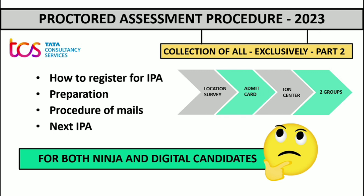Hello guys, welcome to Tech4U channel. This is Part 2 of the video on the proctored assessment procedure. In the last video we discussed how to register for All IPA, the two groups found in IPA, when to choose the stream, and how to access the SN courses. Today we will discuss the process after filling the location survey, how to prepare for TCS IPA, and what study materials help in preparation.